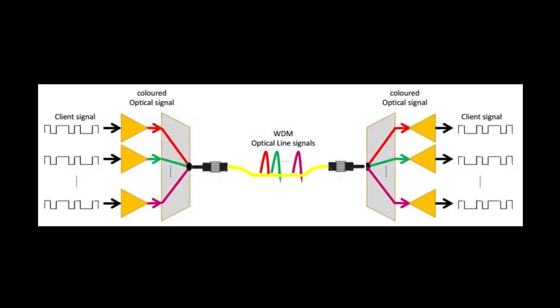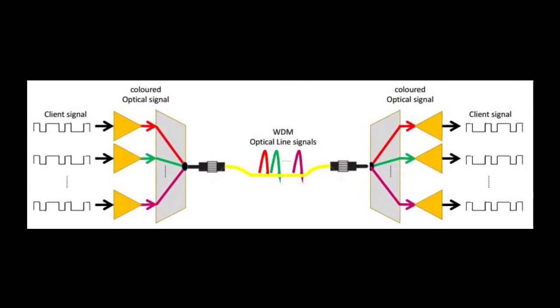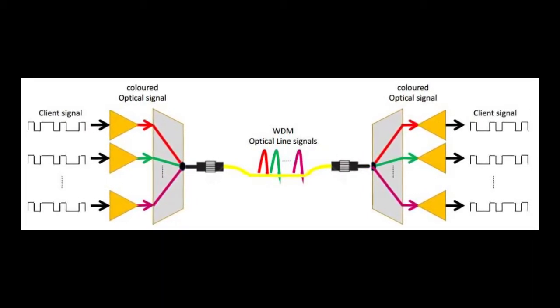The concept corresponding to frequency division multiplexing in the optical domain is known as wavelength division multiplexing.